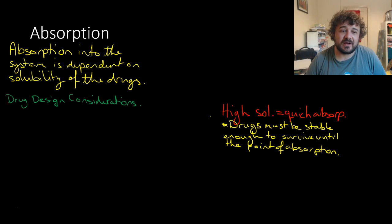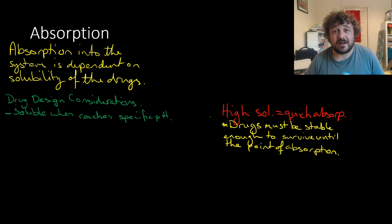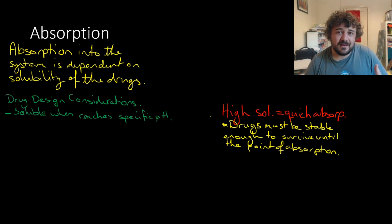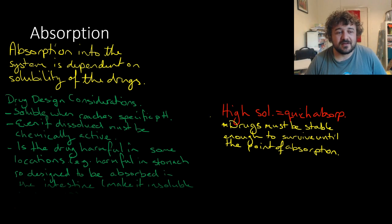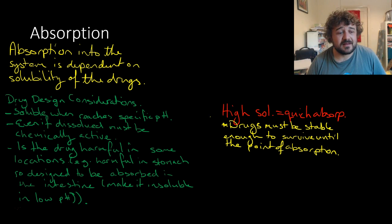So, drug design considerations. We need to know that it's soluble when it reaches a specific pH. For example, if it's in the stomach, it needs to be soluble at a low pH. If you want it to be absorbed in the small intestine, we need it to be soluble at a slightly alkaline pH. So even if it is dissolved, it still needs to be chemically active. Remember, some salts when they dissolve break into separate parts.